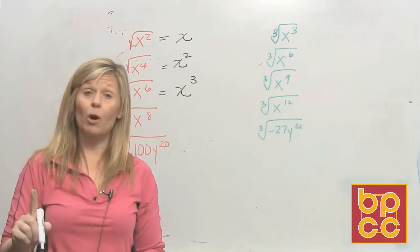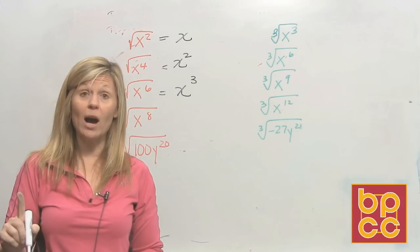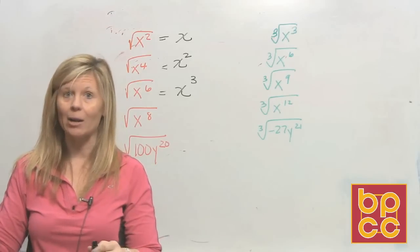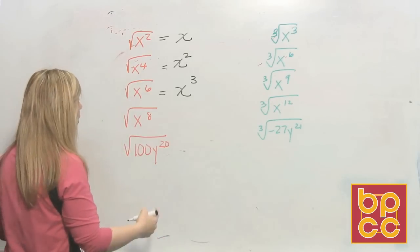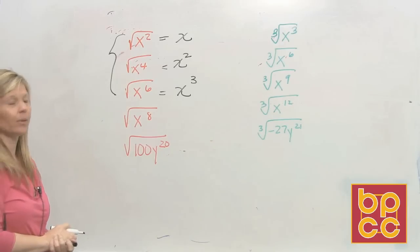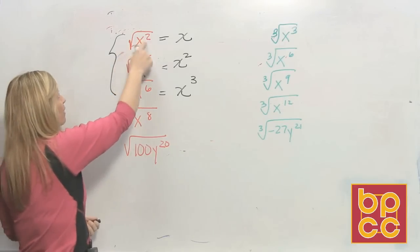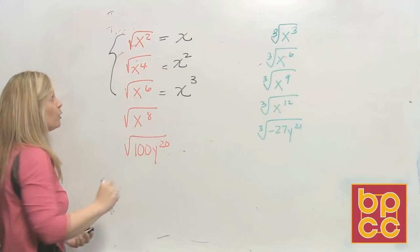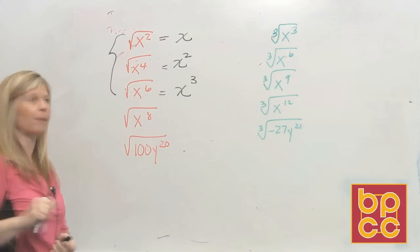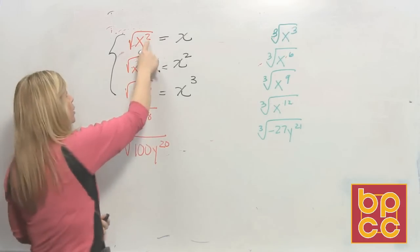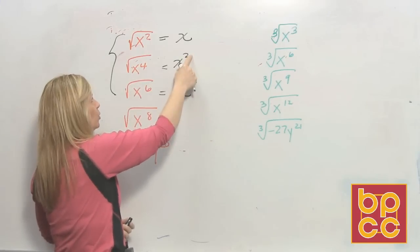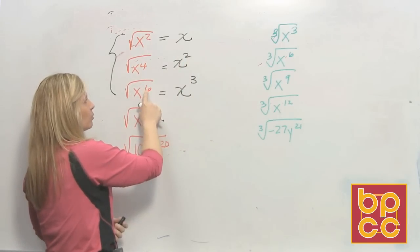x cubed times x cubed is x to the sixth. Remember from chapter 12, when you multiply variables you add the exponents. Now look — I want to see if you see a pattern, a rule going on here. How can we square root a variable quickly? What we're doing with each of these exponents is cutting them in half — we're dividing them by two. Two divided by two is one, four divided by two is two, six divided by two is three.